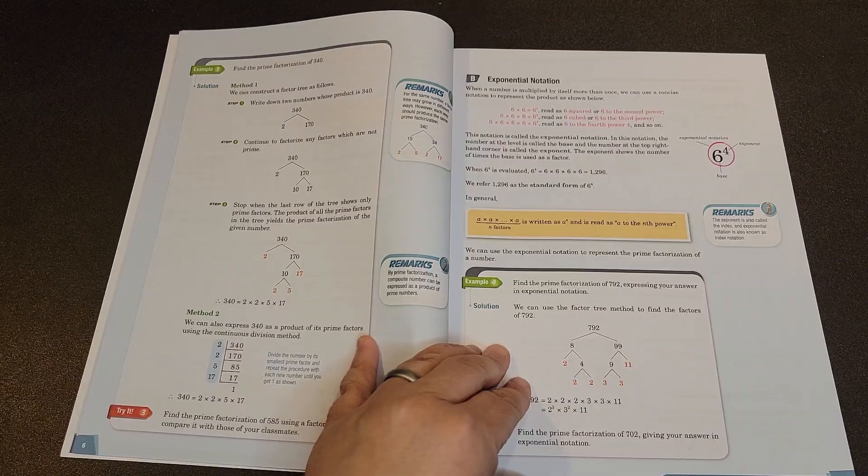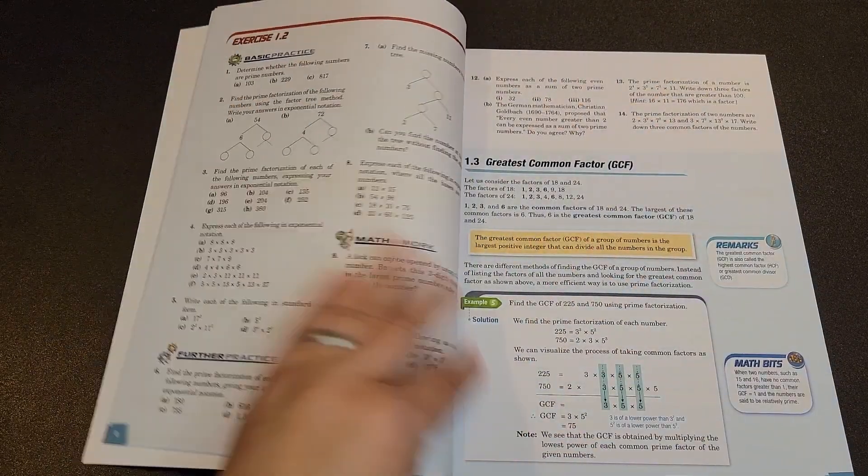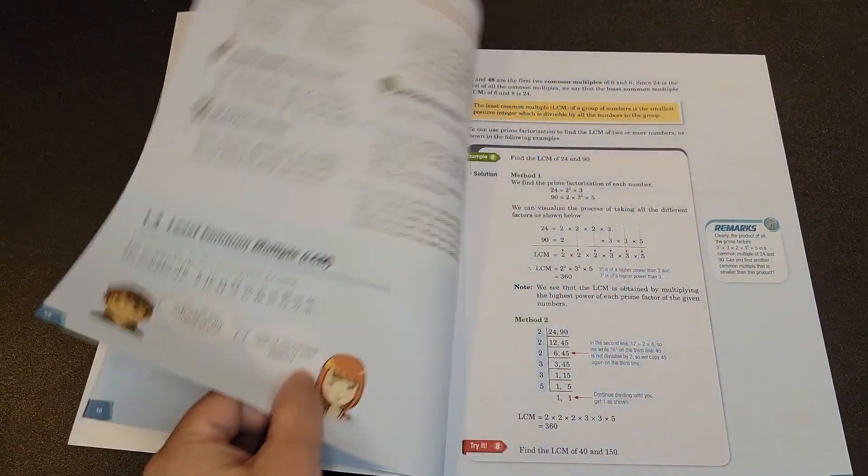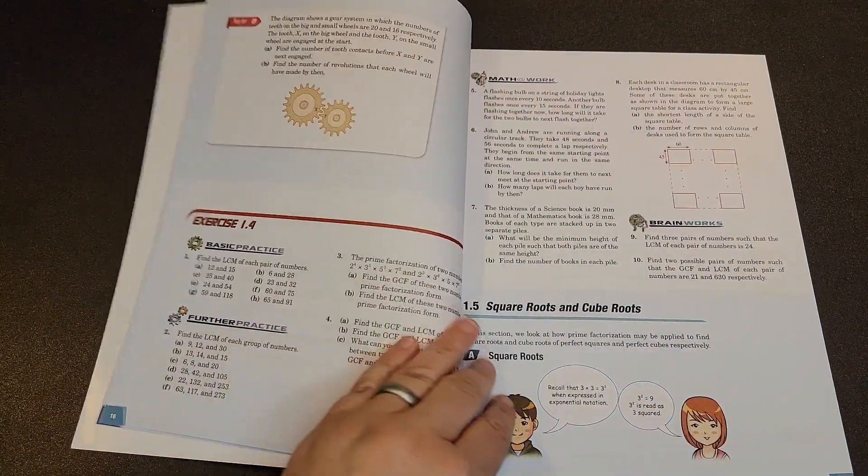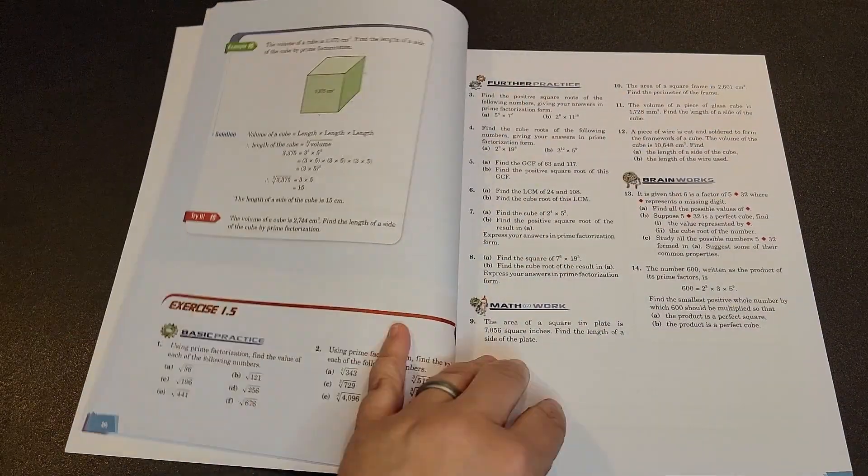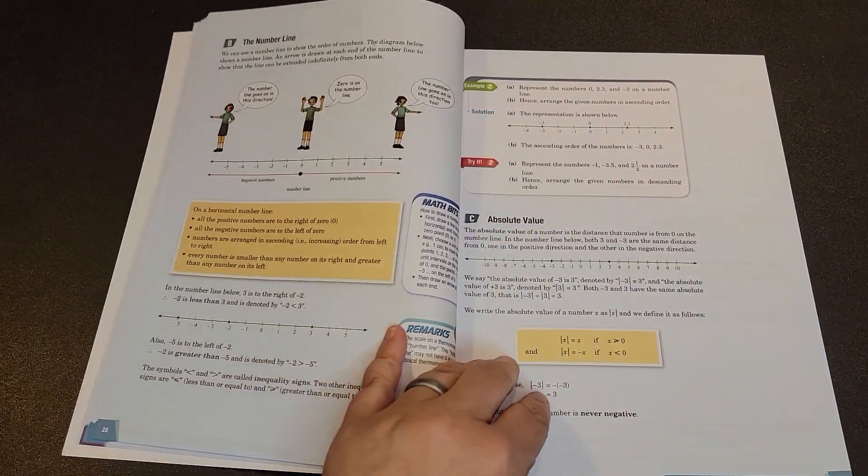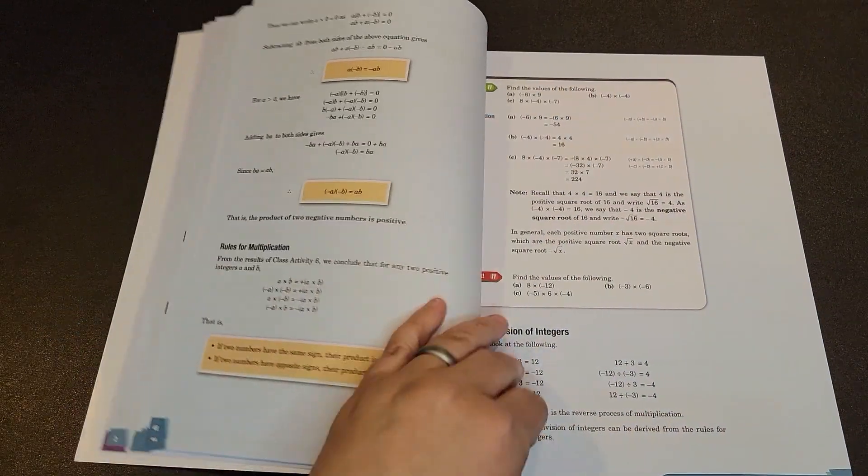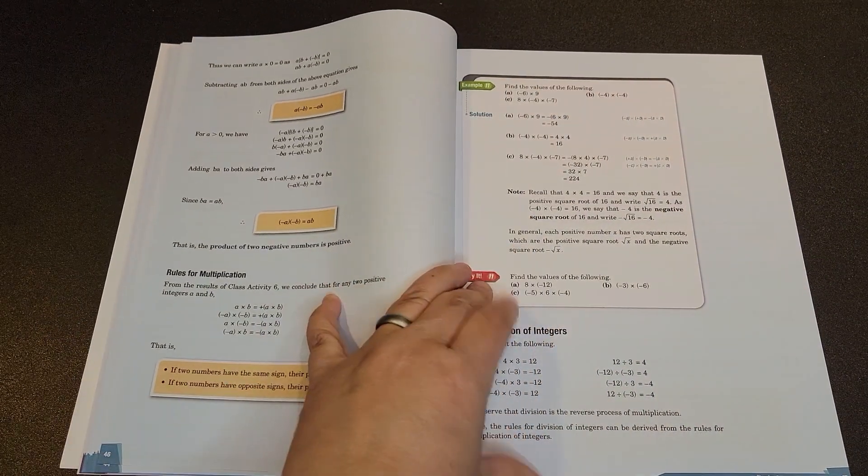So this is, again, what you would have seen in Dimensions 6. It's laid out exactly the same way. You have the same colors. It's just very similar. So this is something that there should be no surprises when you see this textbook. Again, you'll have your examples followed by your try-its.